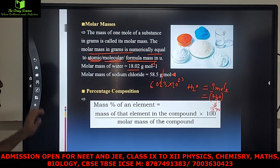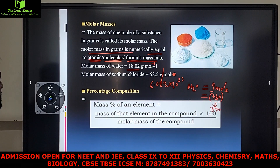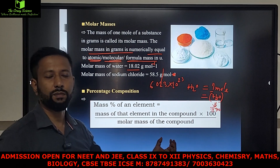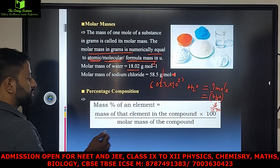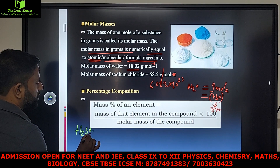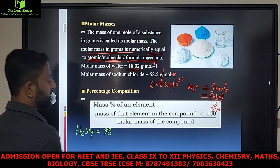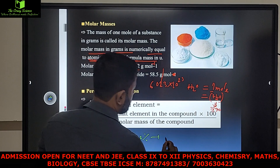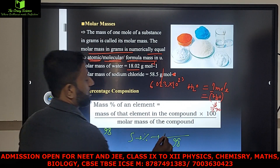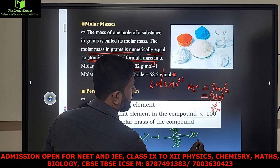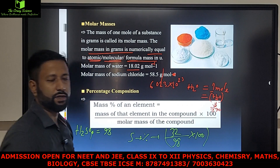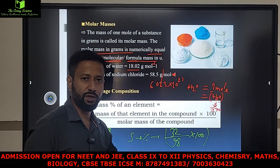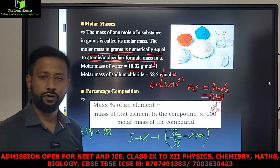Next is percentage composition. Percentage composition tells us the percentage of one element in a compound. For example, sulfuric acid H₂SO₄ has a total molar mass of 98. The percentage of sulfur is calculated as: mass of sulfur divided by total molar mass, multiplied by 100. Sulfur mass is 32 and total is 98, so: 32 divided by 98 into 100. That gives the percentage of sulfur in sulfuric acid.